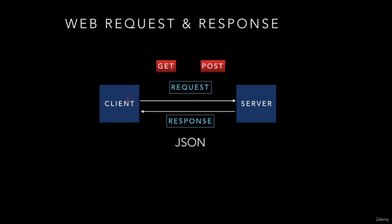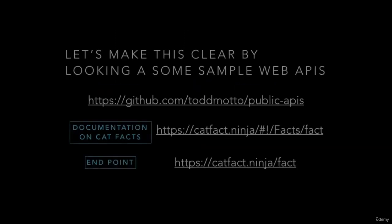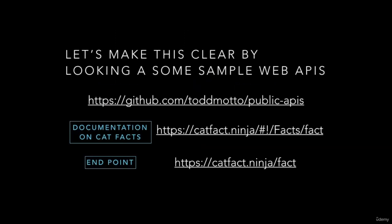The client will connect to the server and issue a request. There are two forms: a get request and a post request. In a get request, information is placed in the URL. The server will then generate a response, and this response could contain your data in the form of JSON. Let's look at some examples of web APIs.